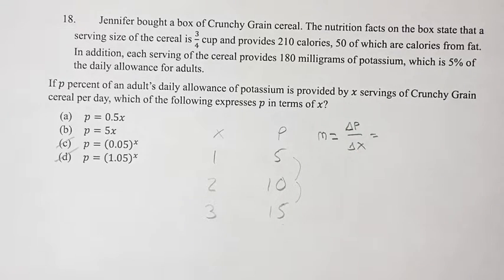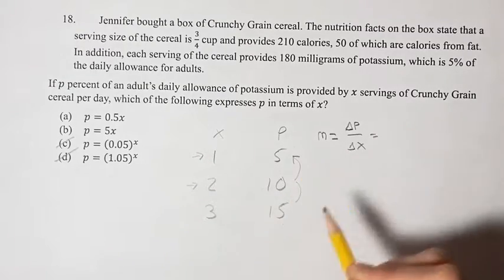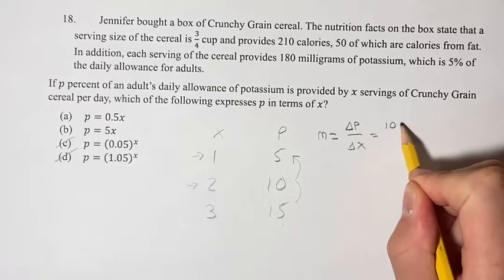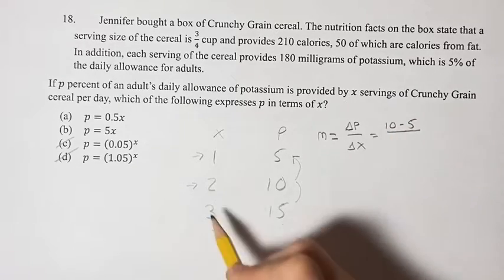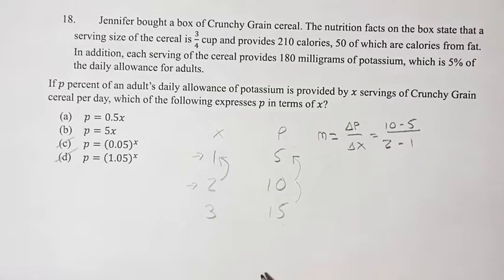The change in p, let's do from this point to this point. p goes from 10 to 5, so 10 minus 5. This is over, change in x goes from 2 to 1, 2 minus 1.